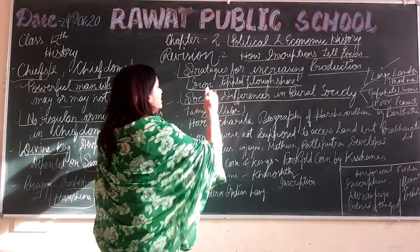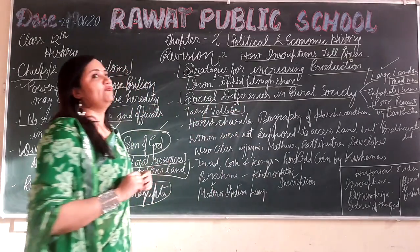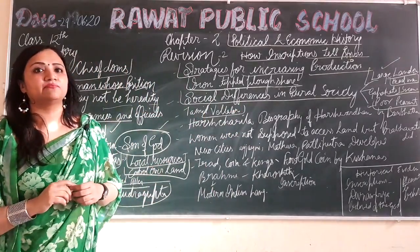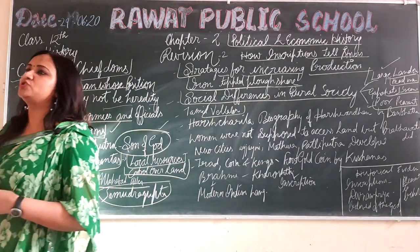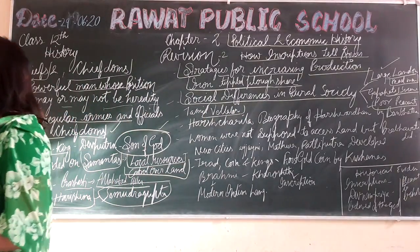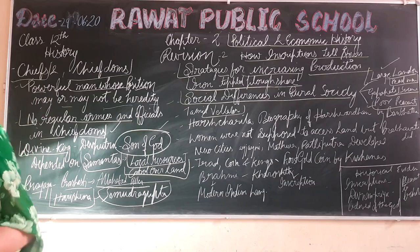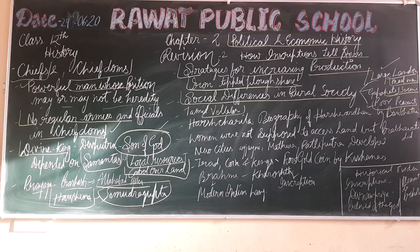According to the language and region, different names were given to the landowners. In Tamil Nadu, for example, landowners were called by different names according to the local language and Bhaskar region.